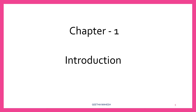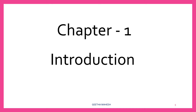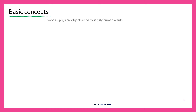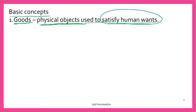Here we are going to start with chapter one: Introduction. Now let us discuss basic concepts. The first basic concept is goods. What do you mean by goods in economics? Goods are a physical, tangible object used to satisfy human wants. They are used to satisfy human wants. Examples: pen, laptop, mobile are the examples for goods.